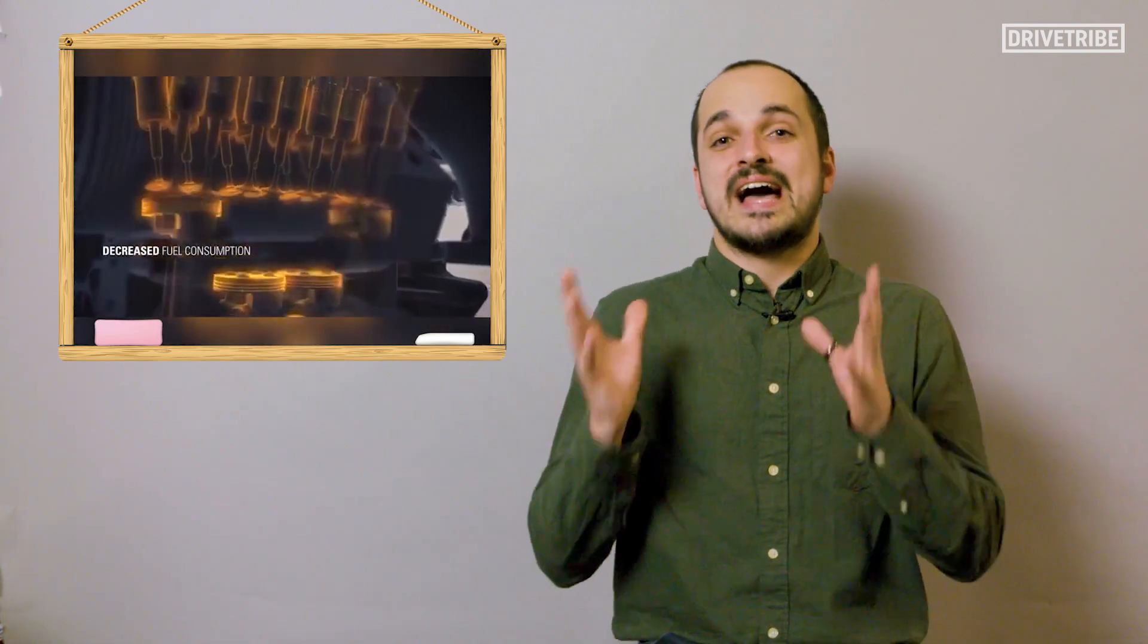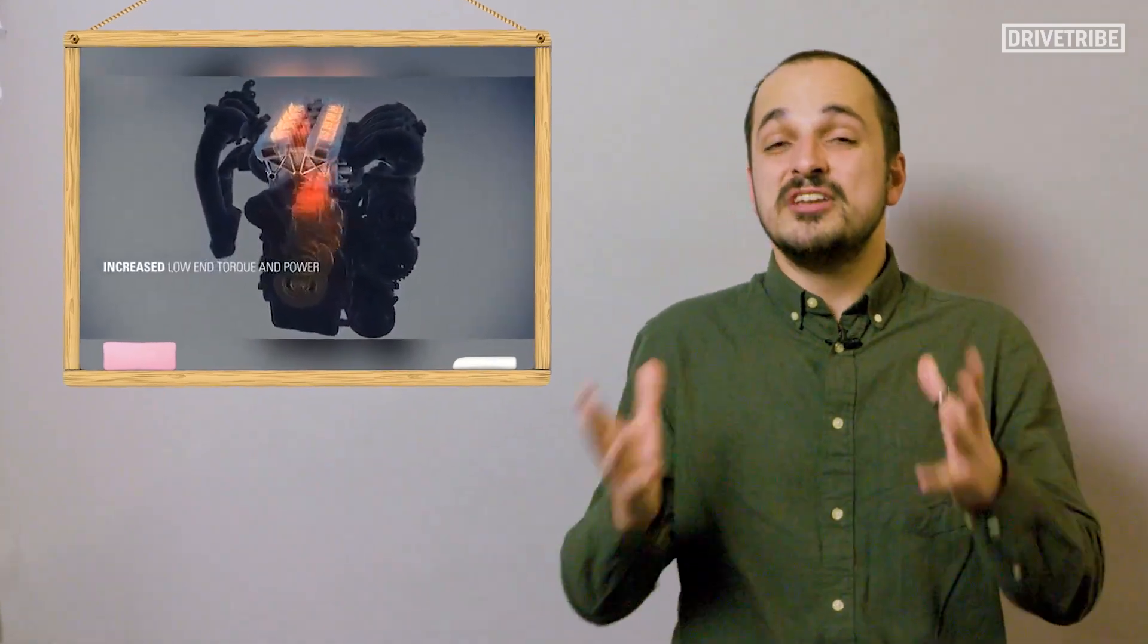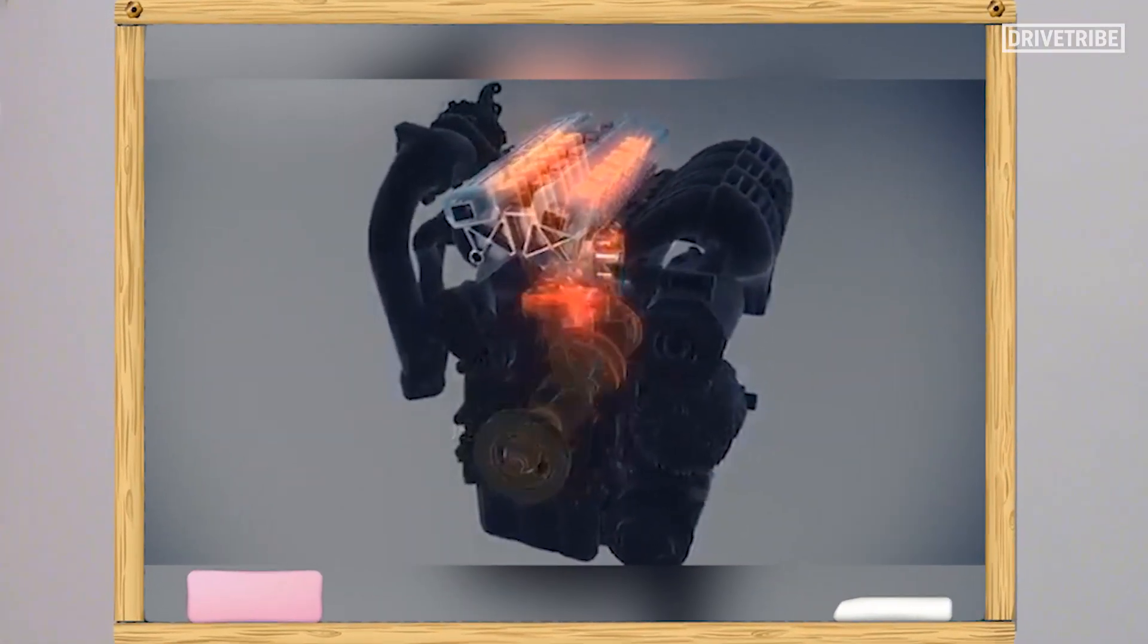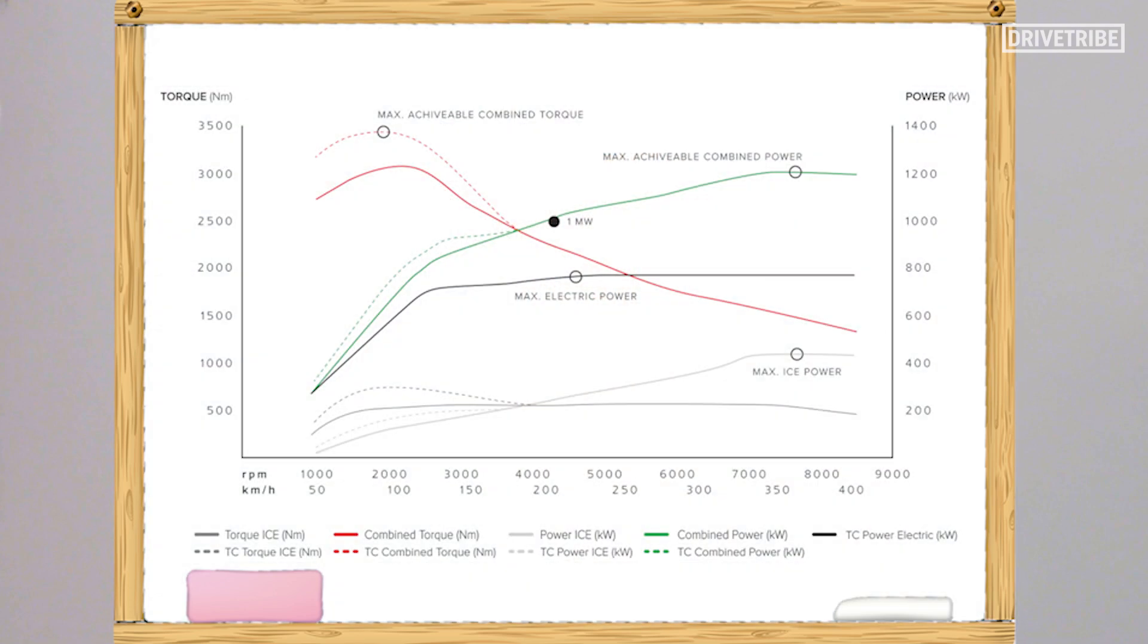Instead of relying on a cam lobe to open and close a valve for a certain amount of time and a certain distance, the Freevalve system allows for constantly variable timing to maximize efficiency, emissions, and most importantly, in Koenigsegg's case, power and torque.